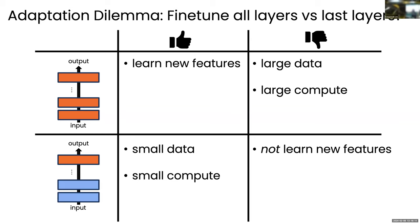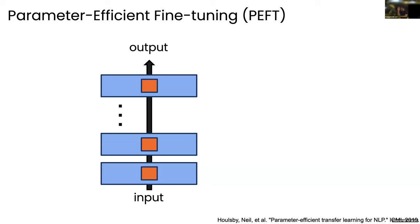The short answer is: in practice, people observed that tuning every layer little by little is still better than just tuning the last layers. That probably means either the features learned from pre-training are not good enough or not the optimal features for downstream tasks — or maybe they're not working at all. We'll talk about some theoretical justification of when that can happen.